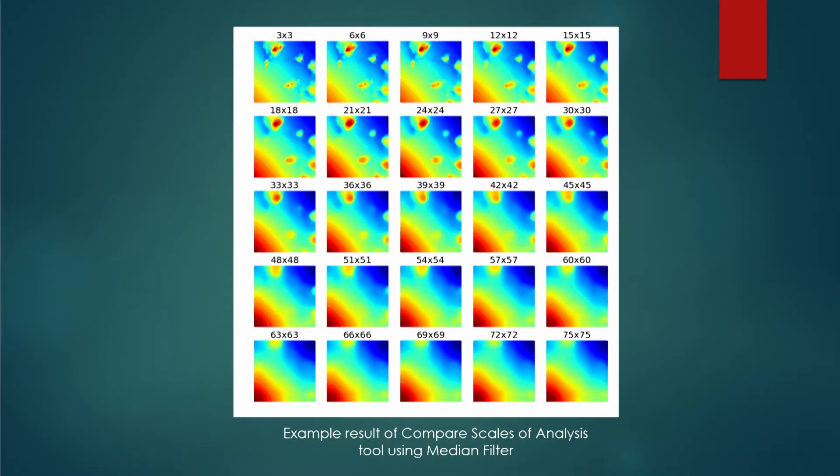One of the tools we made to facilitate this is the Compare Scales of Analysis tool, which is really a pre-processing step that takes a sample of a bathymetric data set and runs a filter over it at up to 25 different spatial scales. This is an example result using a median filter. Basically it shows you that there are different patterns that pop out of your data set at different spatial scales. By visually comparing all these different scales in one image, you can choose which would be most useful to you in your analysis. So instead of running the scripts 25 times and producing 25 huge data sets, you can quickly identify that maybe a 9x9 focal window produces unique results from a 45x45, but maybe lower resolution scales would not be as useful, hopefully cutting down a lot of the processing time.